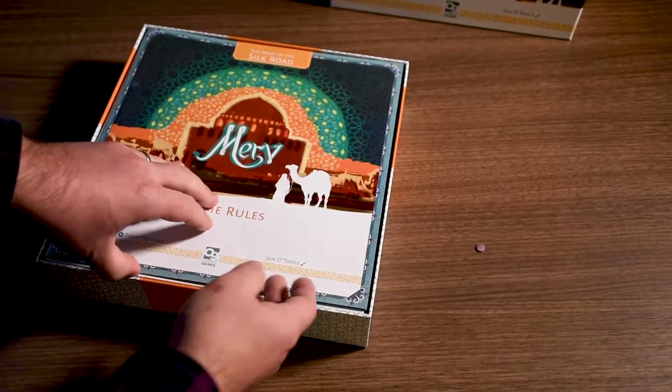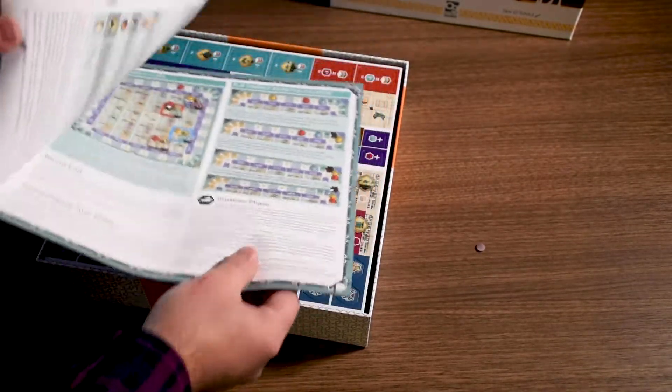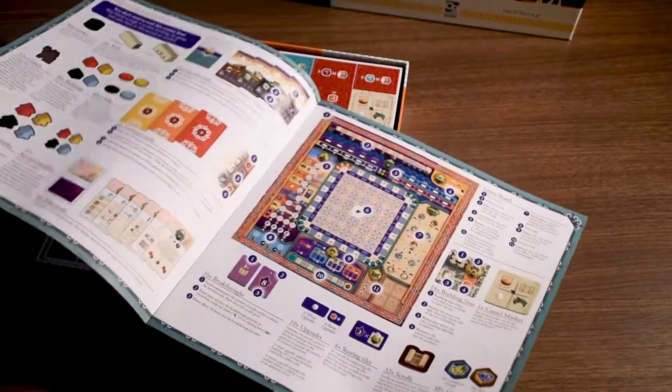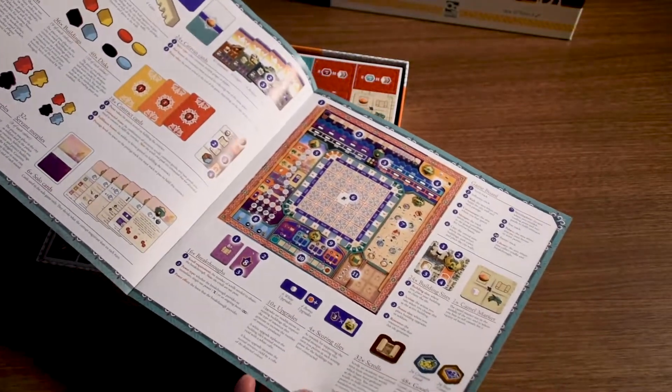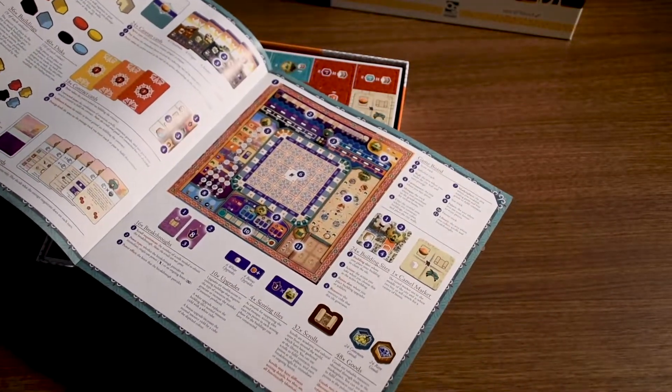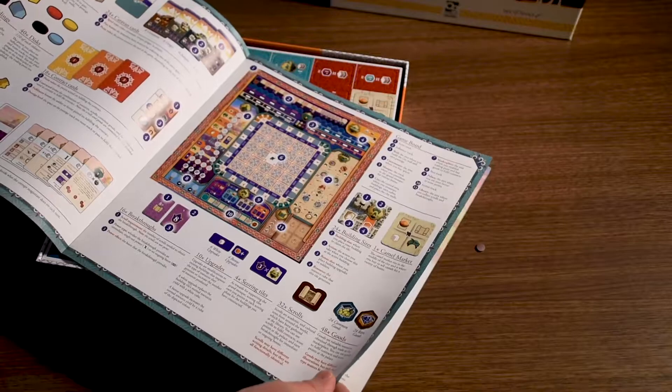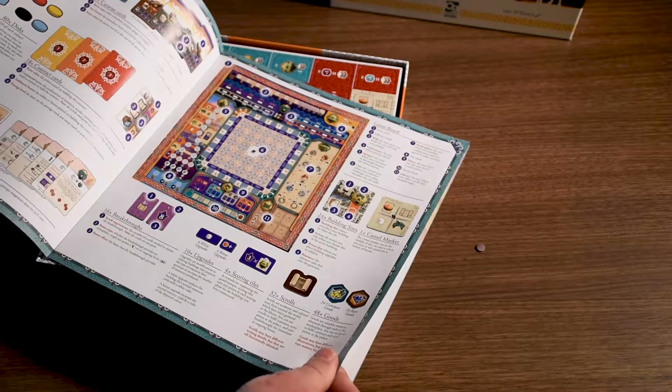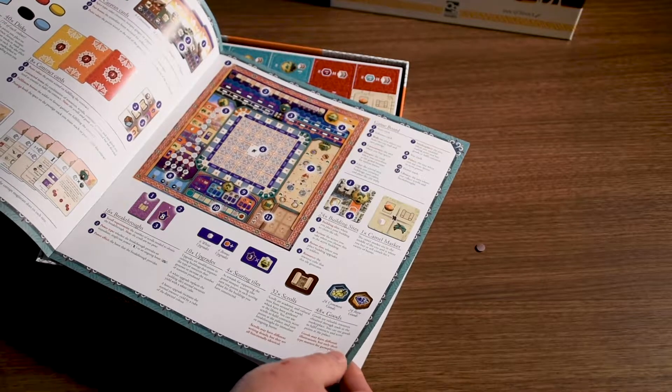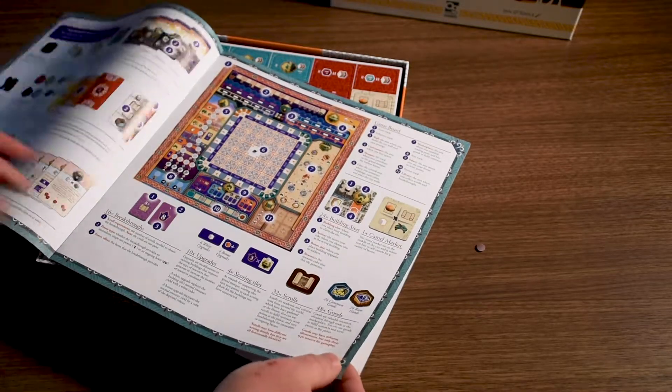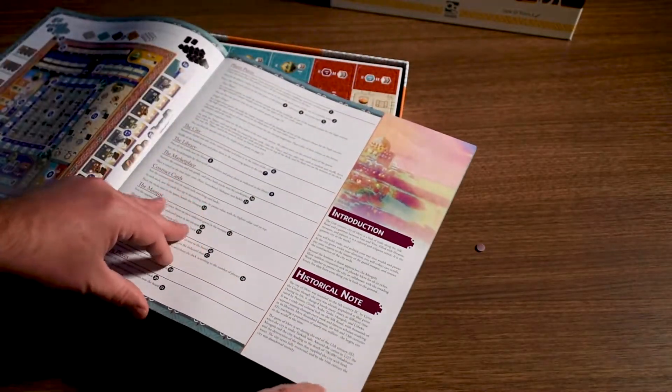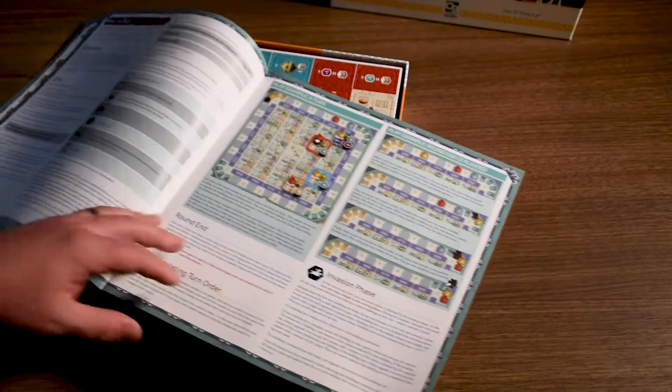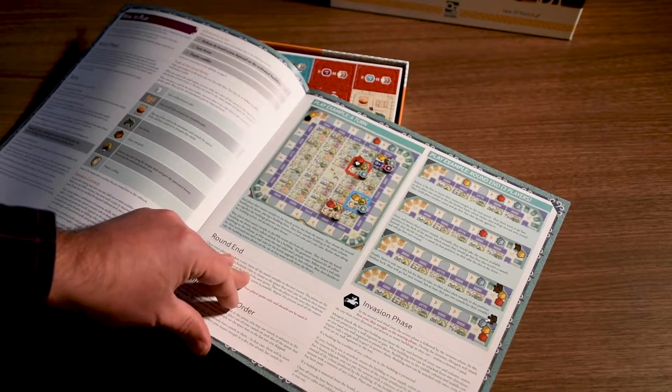Okay, we have game rules here. Osprey has kind of changed their focus a little bit in the last couple of years. They were historically mostly a wargame company, but they've been doing a lot of different stuff like this, so this is more of a Euro-style game. It shows the components, setup, how to play, and a historical note about the city of Merv.